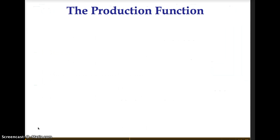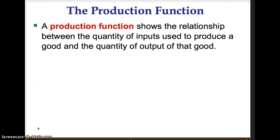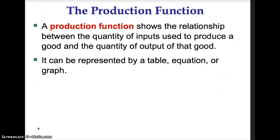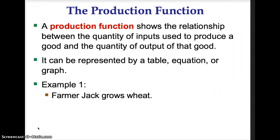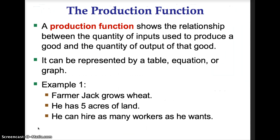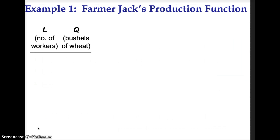The production function shows the relationship between the quantity of input used to produce a good and the quantity of output of that good. The production function can be represented by a table, an equation, or a graph. For example, Farmer Jet grows wheat. He has 5 acres of land and can hire as many workers as he wants. Let's look at Farmer Jet's production function as a table and a graph.